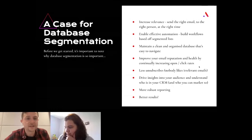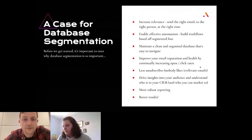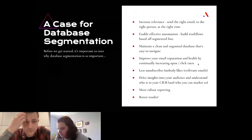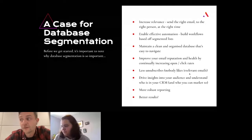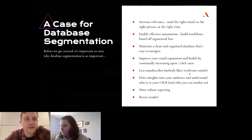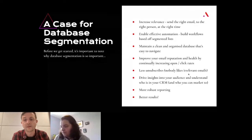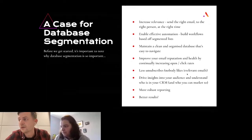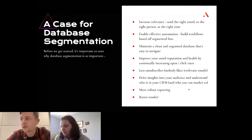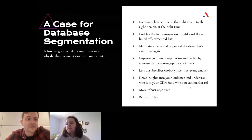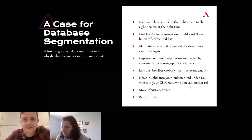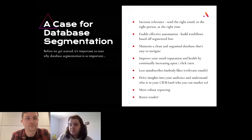Improving your email reputation: segmentation is one of the key ways to improve open rates and click rates, which improves your email health and reputation. You're going to get fewer unsubscribes. If everyone's getting relevant email communications, there'll be fewer people unsubscribing — whereas if you're sending to mass lists, some people will find it irrelevant and your unsubscribe rate goes up. Then you can drive insights into your audience: understand the makeup of your contact database, how many people from certain job roles, how many from certain industries.